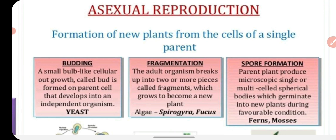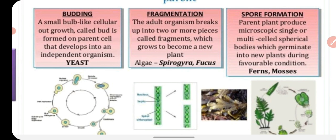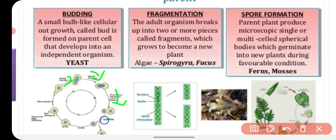In asexual reproduction, only a single parent is involved. One type is budding. In budding, a small bulb-like outgrowth is created, which we call a bud. The bud forms from the parent cell and after some time detaches from the parent body to form an independent organism. This is seen in yeast, where a small bud develops and then detaches from the parent body.